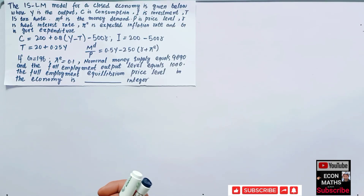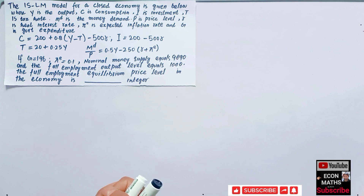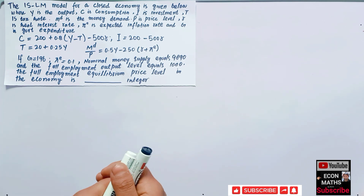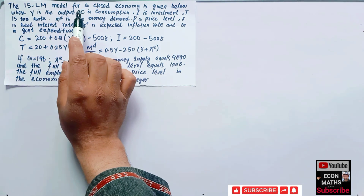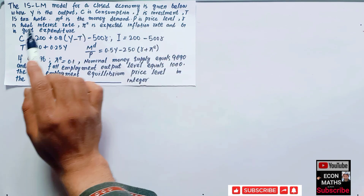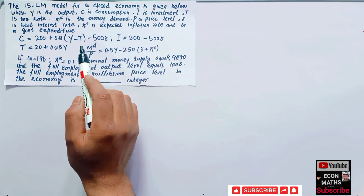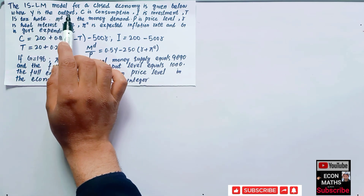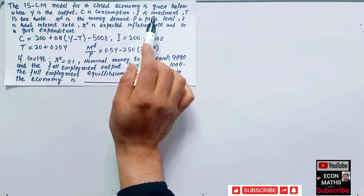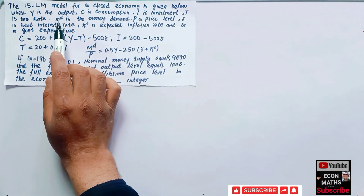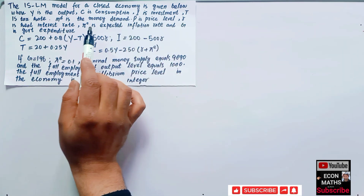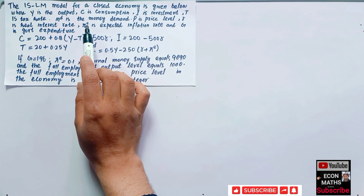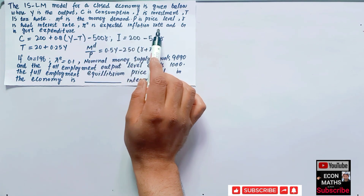In this video we will try to solve another question that was asked in JAM Economics 2021 paper. The question is related to the IS-LM model for a closed economy. We are given variables: Y is output, C is consumption, I is investment, T is tax rate, M superscript D is money demand, P is the price level, r is the real interest rate, and pi superscript E is the expected inflation rate, G is government expenditure.